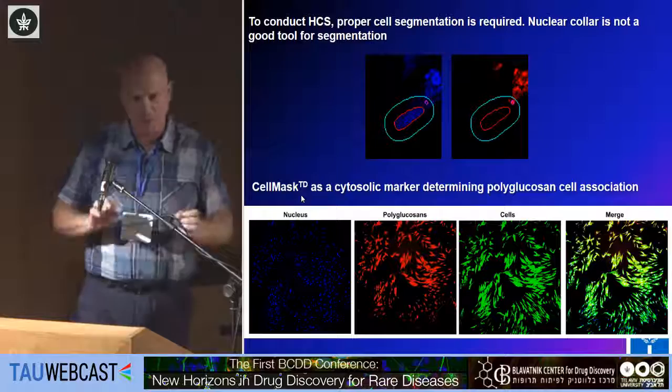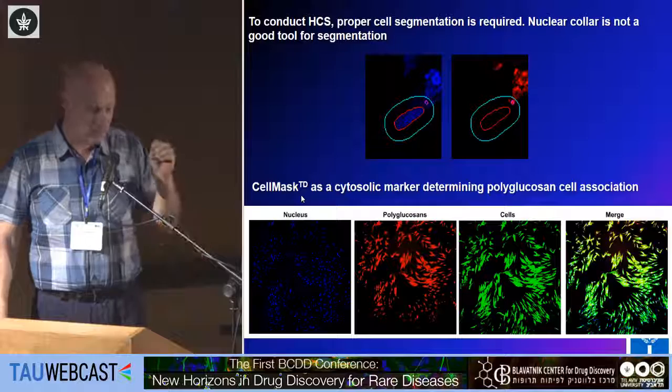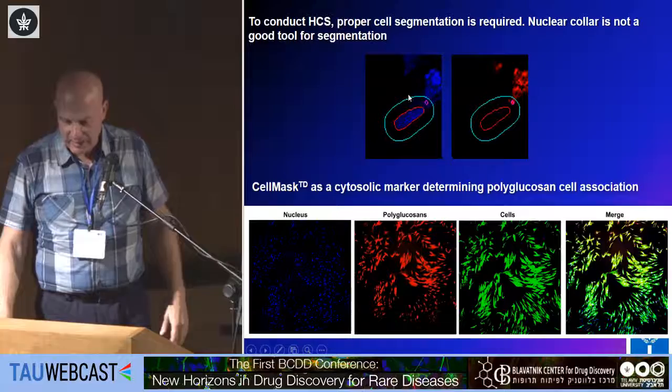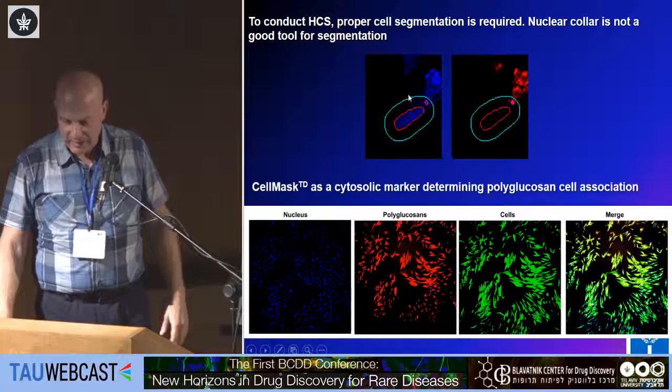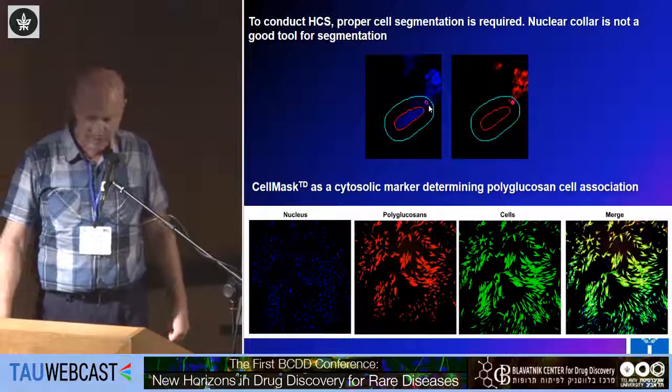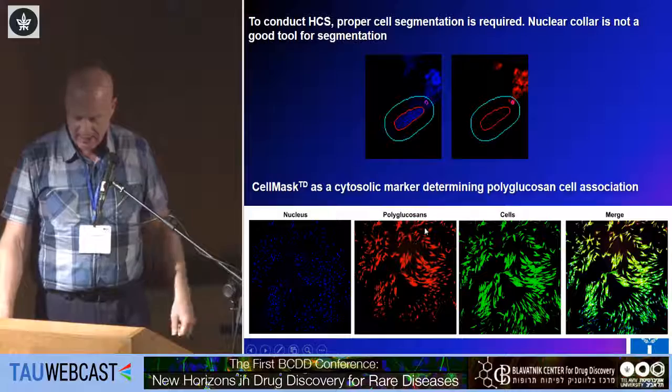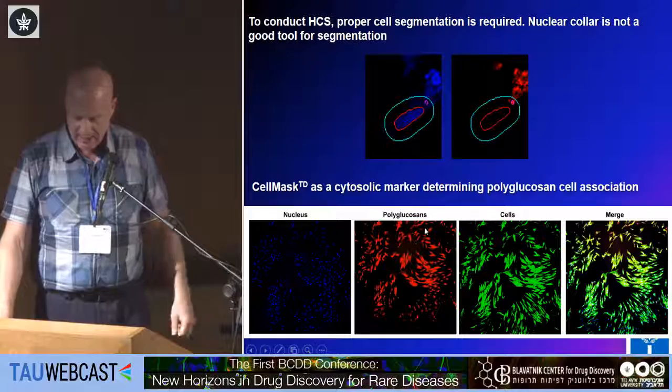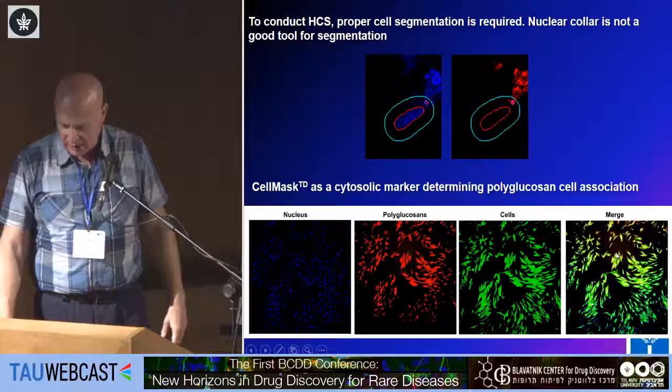One important non-technical point: you want to make sure your readout is what you intend and that you are looking at the right entity. For instance, we use segmentation. The classical segmentation is based on the nuclear collar, which can include extracellular debris as part of the cell. Instead, we use the cell mask, which stains the cytosol, and you can see that all the polyglucosans we identified are actually cell-associated.